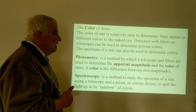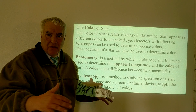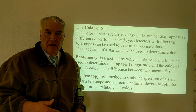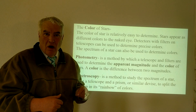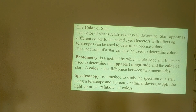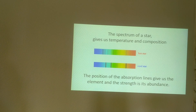There's a more precise way, which is called obtaining the spectrum of a star. We use a prism or a grating that spreads the light into the spectrum of colors, which we're familiar with in everyday life from the rainbow — a water droplet takes sunlight and breaks it up into the spectrum of colors. So while photometry uses a telescope and filters to determine the apparent magnitude, spectroscopy is a method to study the spectrum of a star using a telescope and a prism or similar device.